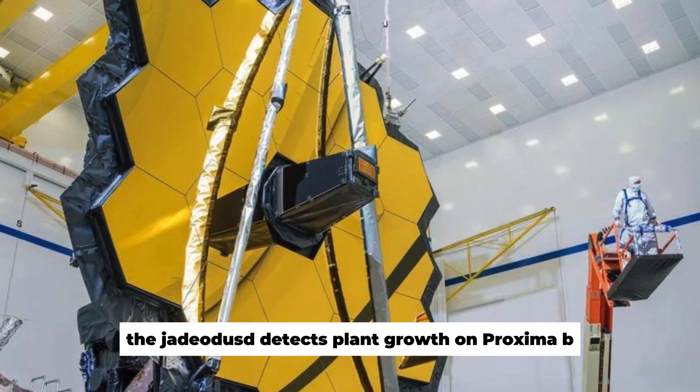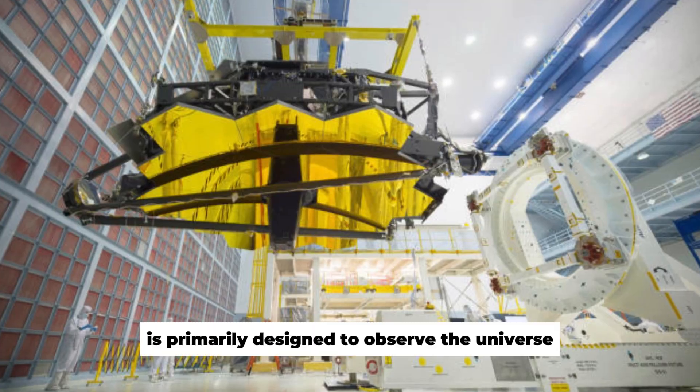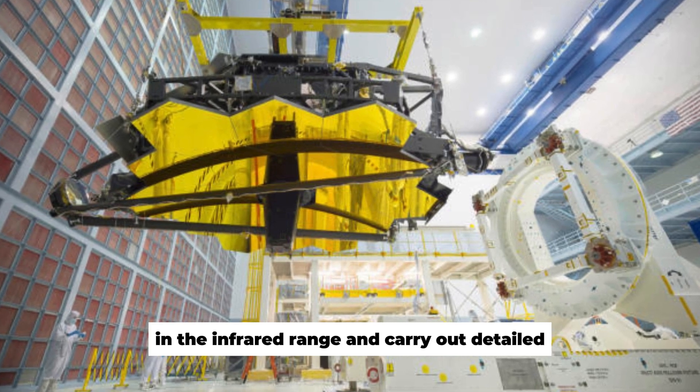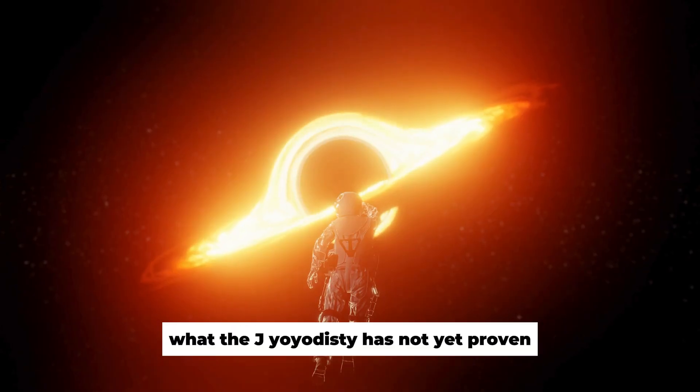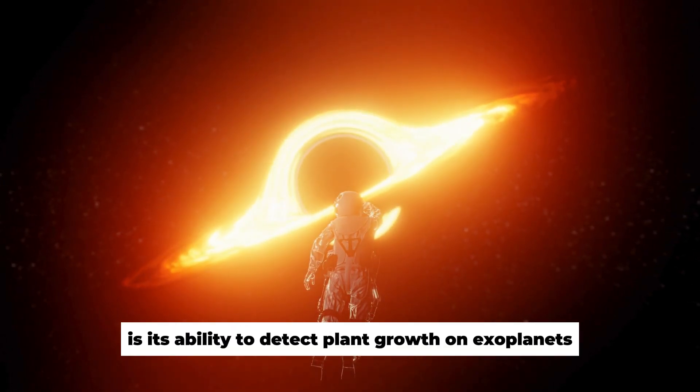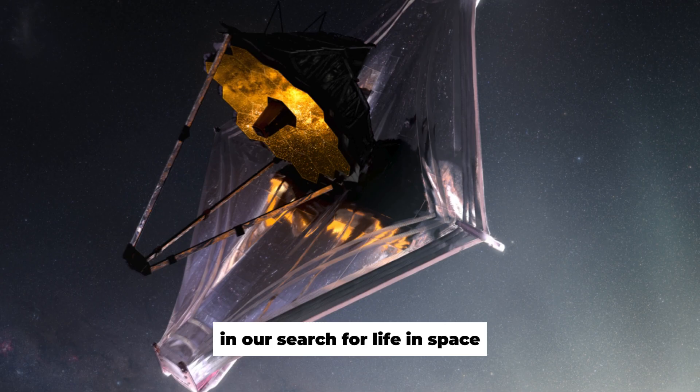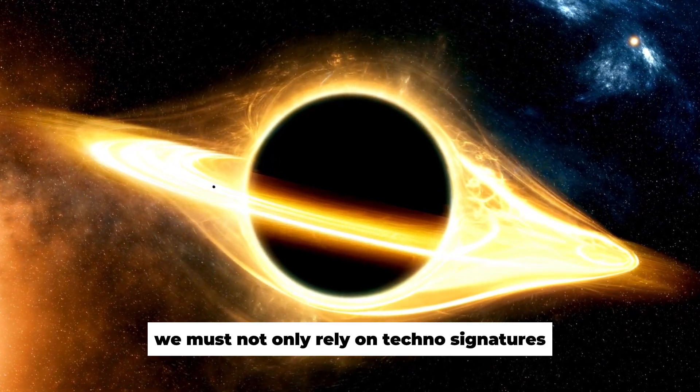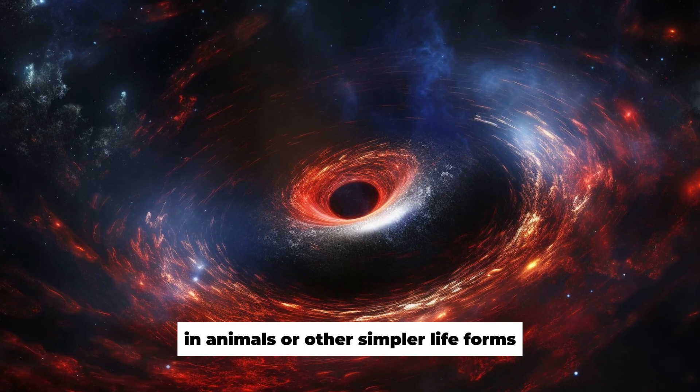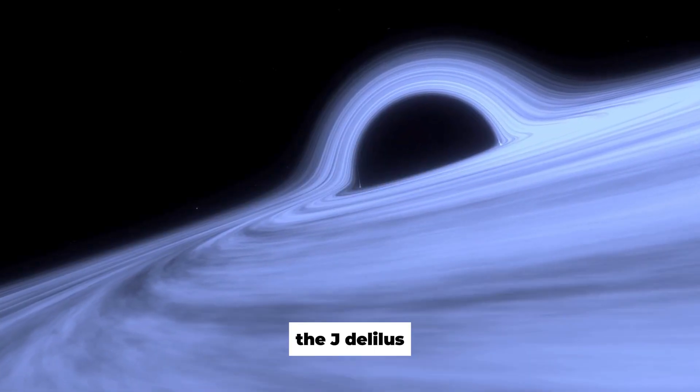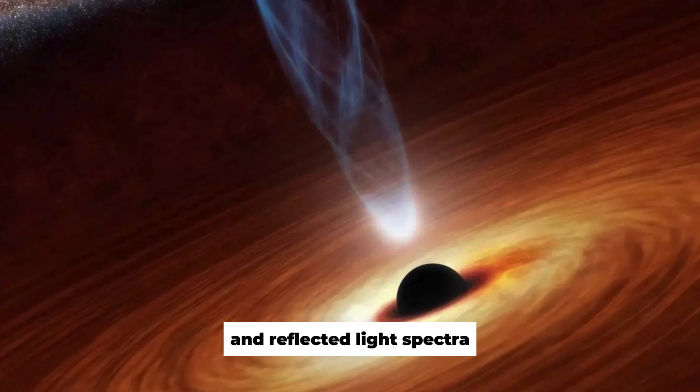The JWST detects plant growth on Proxima b. The James Webb Space Telescope, or JWST, is primarily designed to observe the universe in the infrared range and carry out detailed spectral analyses of distant celestial bodies. What the JWST has not yet proven is its ability to detect plant growth on exoplanets, but it does have the potential to do this. In our search for life in space, we must not only rely on technosignatures and the emissions of highly advanced species, we must also look for planets that may only have plants and animals or other simpler life forms.